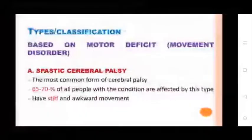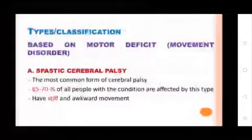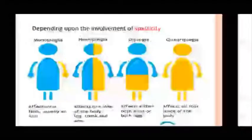Classifications of Cerebral Palsy are based on motor deficit and movement disorder. Type 1: Spastic Cerebral Palsy — the most common form, affecting 65-70% of people with the condition. Affected individuals have stiff and awkward movement depending upon the degree of spasticity.